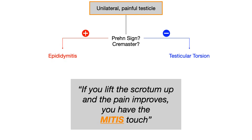That reminds me that in epididymitis, when you have a positive Prehn's sign and lift the scrotum up and pain improves, you have the Midas touch. So positive Prehn's in epididymitis. I just pair a positive Prehn's with a positive cremaster. The opposite is true for testicular torsion, making it super simple to differentiate epididymitis from testicular torsion.